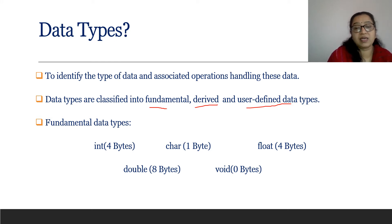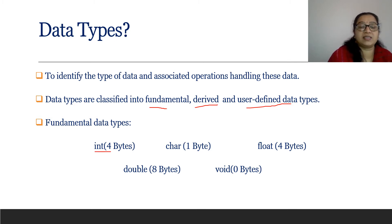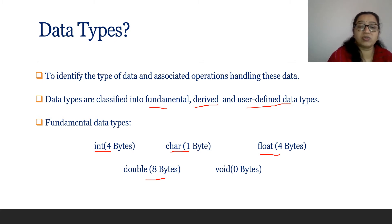We learned fundamental data types last year; in upcoming chapters we will learn derived and user-defined ones. Now let's revise fundamental data types. The fundamental types are: int — 4 bytes; char — 1 byte; float — 4 bytes; double — 8 bytes; and void — 0 bytes. These are the predefined fundamental data types.